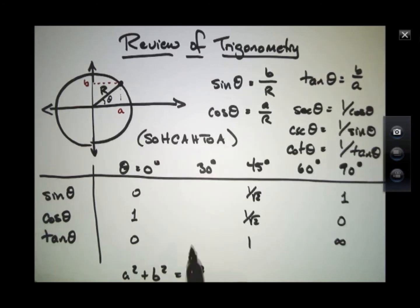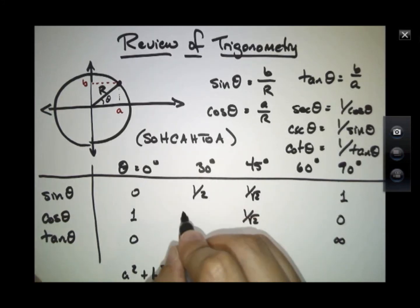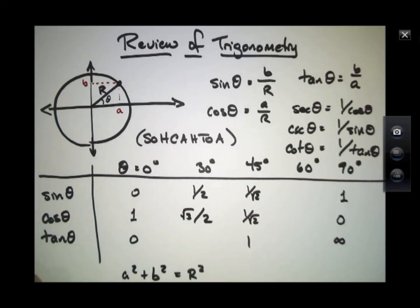And for 30 degrees, the sine of theta is 1 over root 3. The cosine of theta is root 3 over 2, and the tangent, which is sine over cosine, is 1 over root 3.